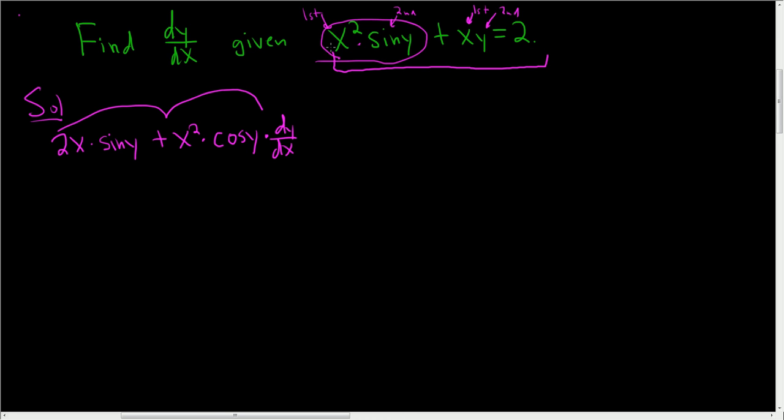Let's check it. Let's see. The derivative of the first is 2x. Checks. Times the second, which is sine y. Checks. Plus the first. Checks. Times the derivative of the second, which is cosine y, dy/dx.